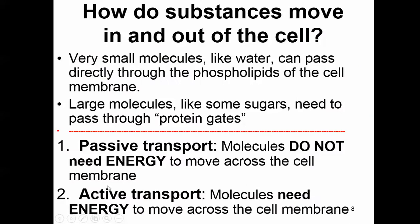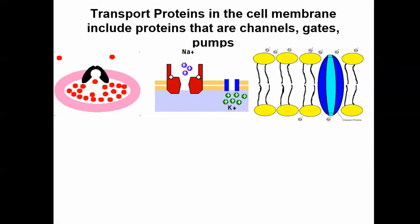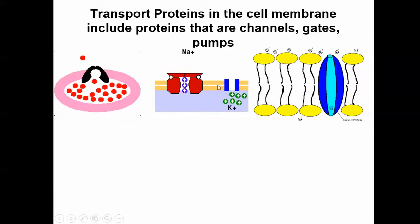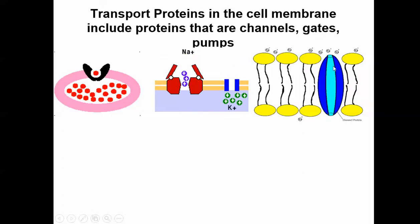We're going to talk about passive and active transport and look at some examples. Here are different aspects of things passing through — all using the protein channels. Sometimes they go all the way through. Sometimes the protein channel goes all the way through. This one is embedded in the layer and it opens and closes. This one kind of rotates around — this is like a carrier protein. This is a protein pump and this is a channel protein.